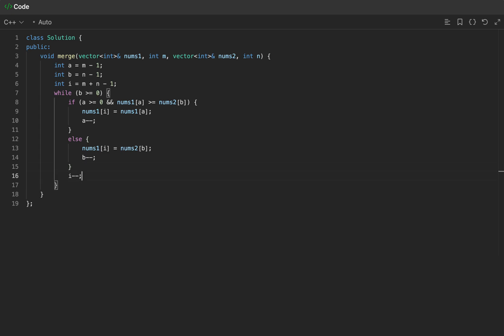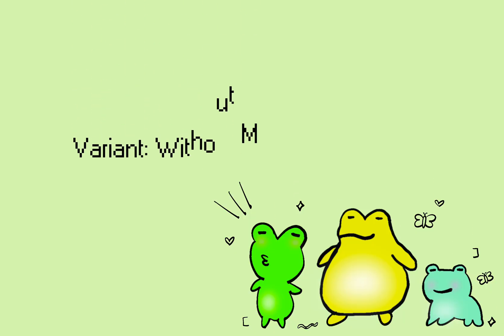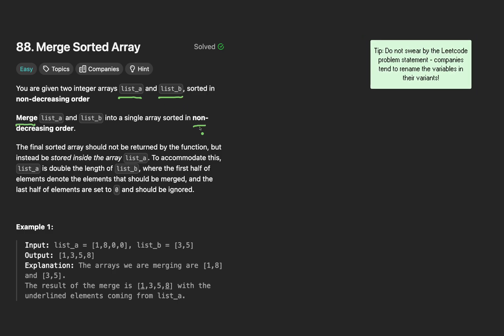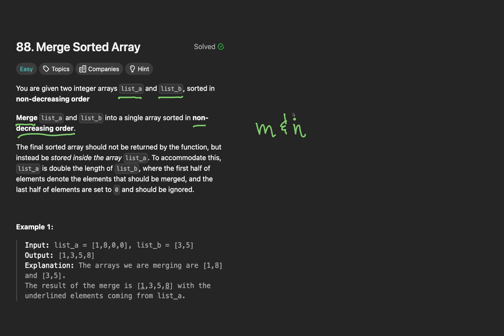Let's go ahead and take a look at the variant now. Okay, so the variant that's given is a little bit more ambiguous, but some things still remain the same. For example, we're still given two vectors, but this time they're list a and list b. We still want to merge both of these vectors in a non-decreasing order. One thing that's different is we're not given m and n like we were before. However, we are given the fact that list a is going to be double the length of list b. Given these new requirements, let's go ahead and go over an example.